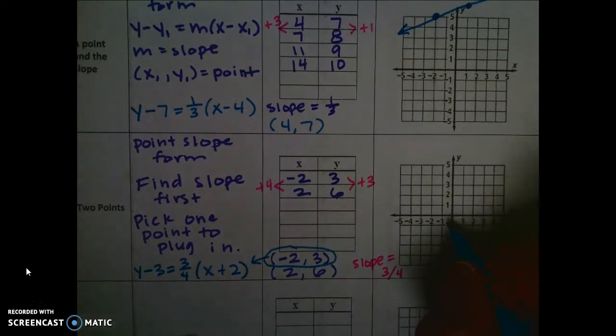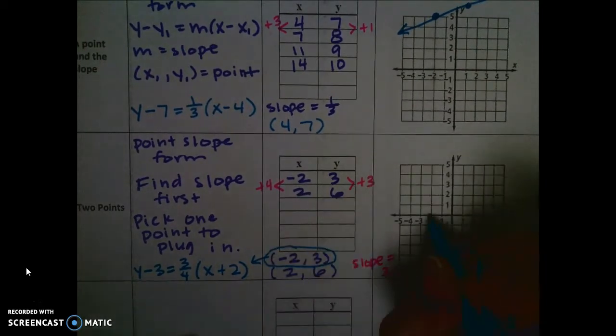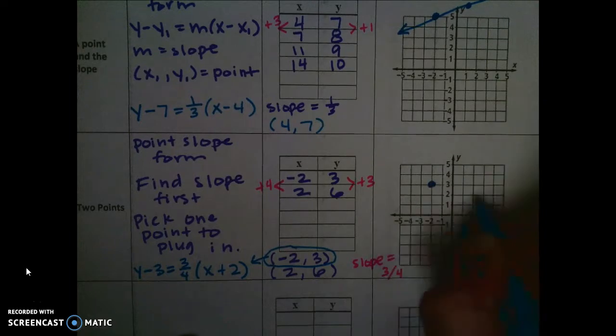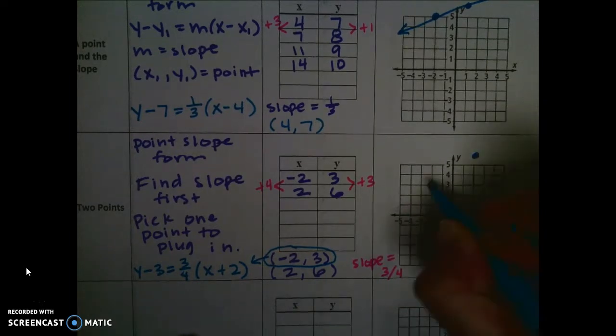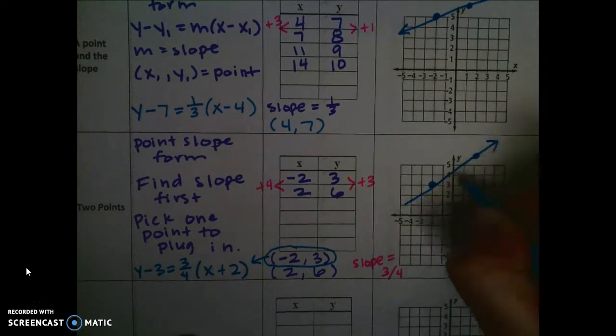And then to graph it, I'm literally just going to graph these two points. So negative 2, 3, and then positive 2, 6. Again, that goes off the graph. That's okay. And then make your line.